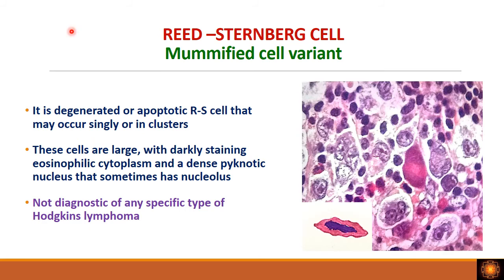The mummified cell variant is a degenerated or apoptotic RS cell that may occur singly or in clusters. Like any cell undergoing apoptosis, it has dark pink eosinophilic cytoplasm with a darkly staining pyknotic nucleus. These cells have dense pyknotic nuclei that may or may not have a nucleolus, but the typical feature is intensely eosinophilic cytoplasm. This variant does not specify a particular subtype of Hodgkin's lymphoma, but its presence in a lymph node biopsy suggests Hodgkin's lymphoma.